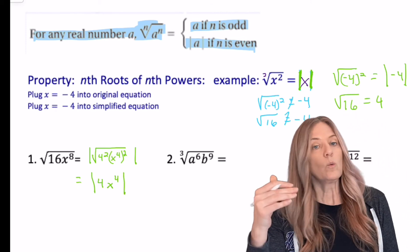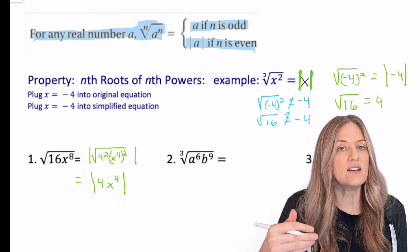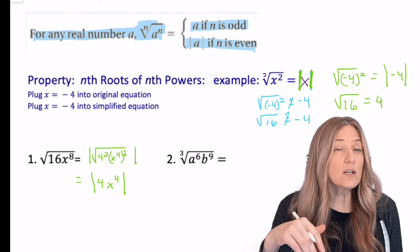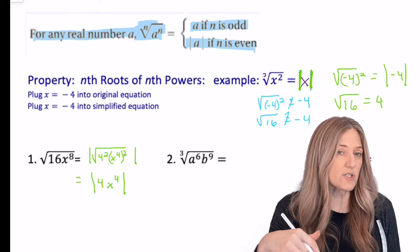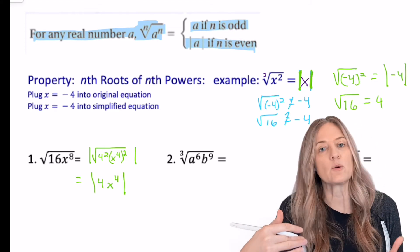Now we should be thinking absolute value bars here because it's an even index. However, as I look closer at what the simplified version is, four is already positive. So I don't need the absolute value around the four.